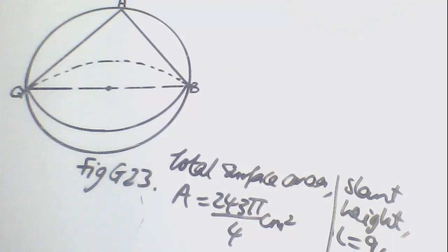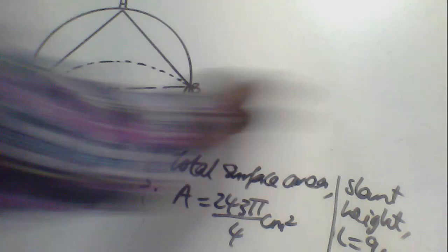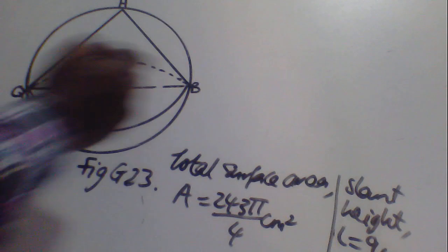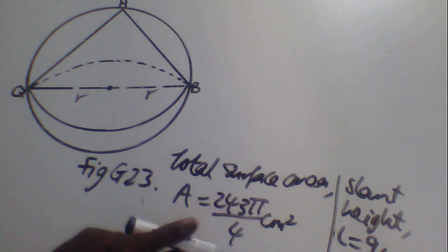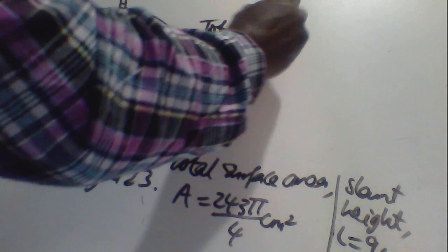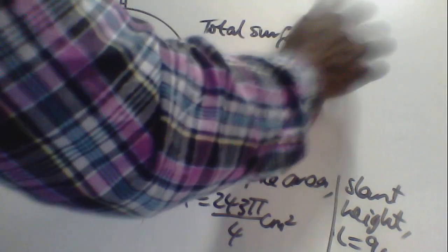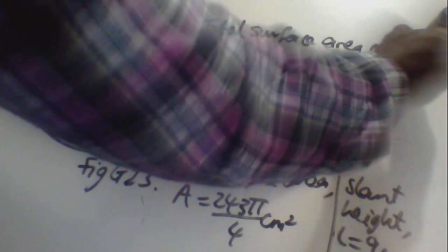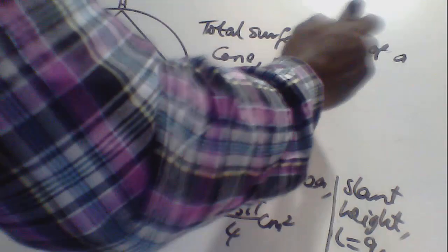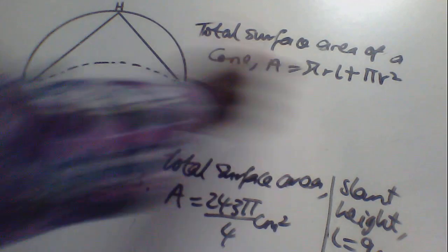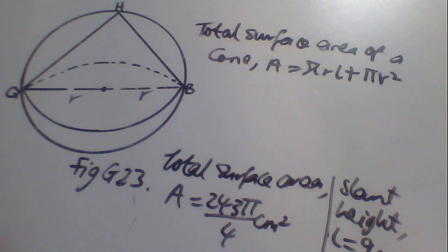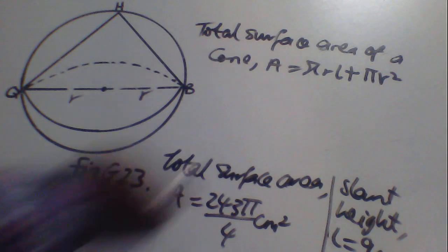The first thing we have to do is find the base radius of the cone. The total surface area of a cone is: A equals πRL plus πR², where πRL is the curved surface area and πR² is the base surface area.